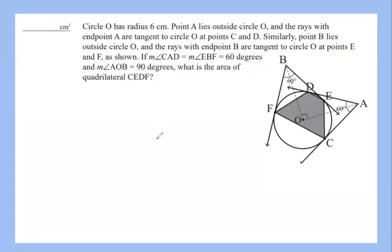We have a MATHCOUNTS problem — this is the 2024 Spring Chapter Computation round, problem number 30, which is the last question on the test. We have a circle with a radius of 6. There are points A and B, and from each point you draw two tangents to the circle. The angle at A and at B is 60°, and there's a 90° angle between OB and OA. We want the area of the shaded region, which looks like a tri-poise shape.